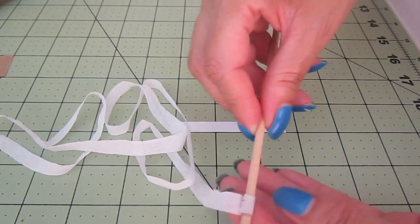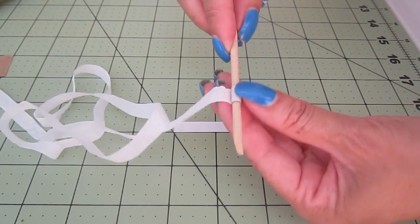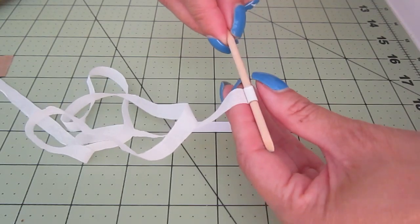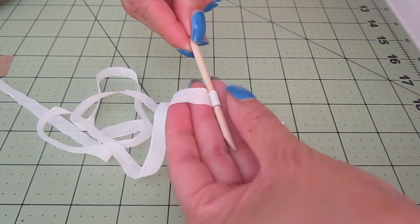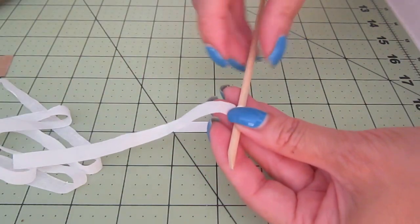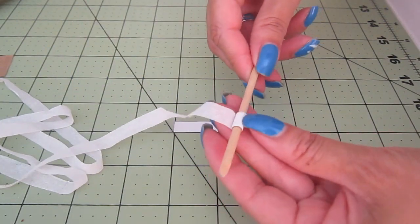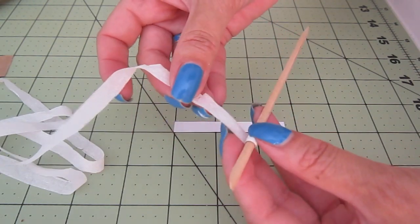And by holding it with the orange stick, it gives me the ability to control and stay in the center. Otherwise, it's very easy to go crooked and then it doesn't give you an appearance of a well-manufactured roll of toilet paper.